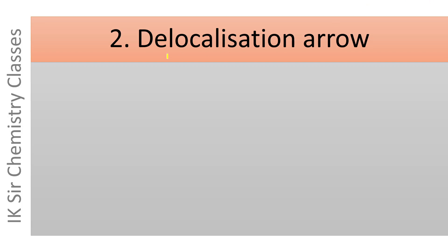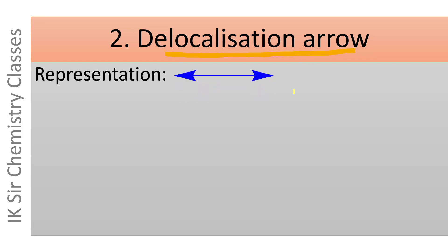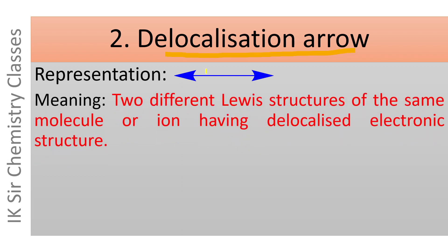The second one is the delocalization arrow. This delocalization arrow is denoted by a double-headed arrow, and its meaning is: two different Lewis structures of the same molecule or ion having a delocalized electronic structure. If a molecule or ion has a delocalized electronic structure, then its two different possible Lewis structures are separated by this delocalization arrow.